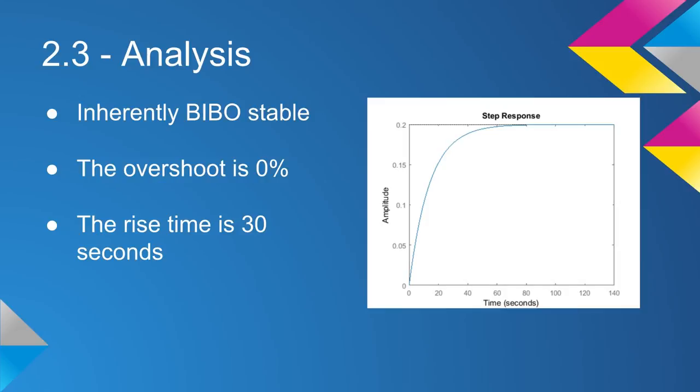Zero percent overshoot is an excellent characteristic because when you're riding on the road, you don't want your motorcycle to be at a different speed than it actually is on the dial. The system is also inherently BIBO stable because it's a first-order system, so you'll never have to worry about it becoming unstable.